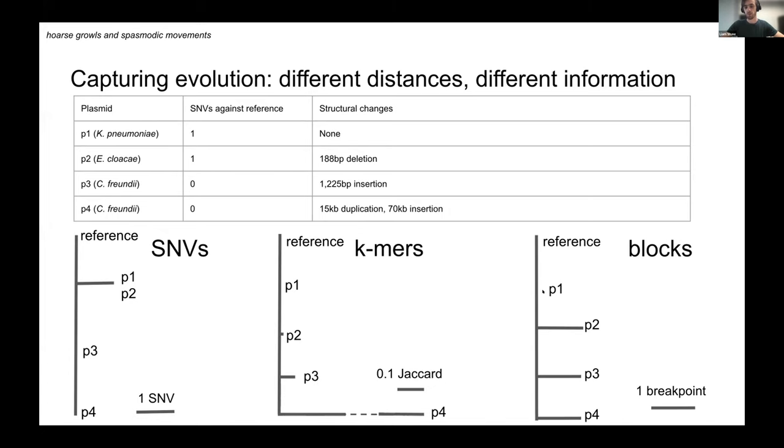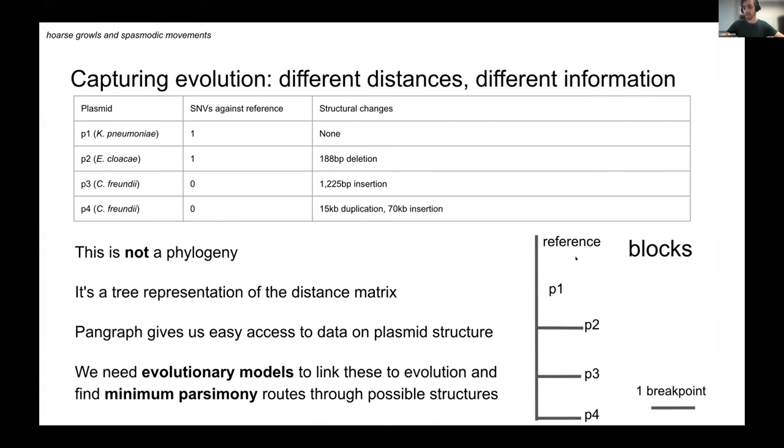And now here we're using blocks and the breakpoint distance. P1 is the same as the reference. All of the other things have one breakpoint with respect to P1 and two with respect to each. So this is not a phylogeny. It's a tree representation of the distance matrix. This is very easy to get out of PANGRAPH. We get really easy access to data on the plasmid structure, but what we need is evolutionary models to link those distances to evolution and find minimum parsimony routes. We might want to decouple this one breakpoint into two different things, but we need a model of evolution to do that. So far, we're just saying every breakpoint is the same.